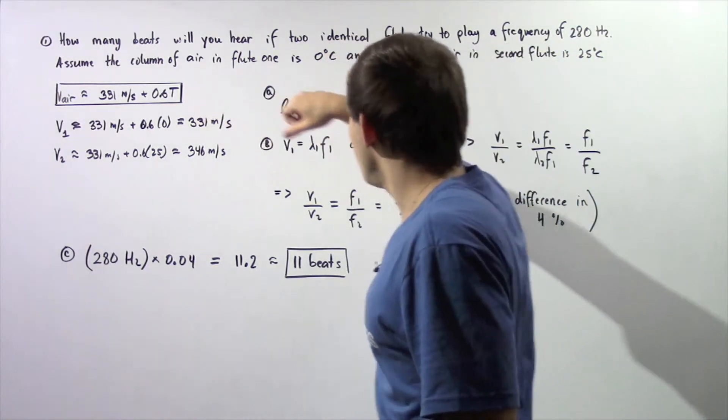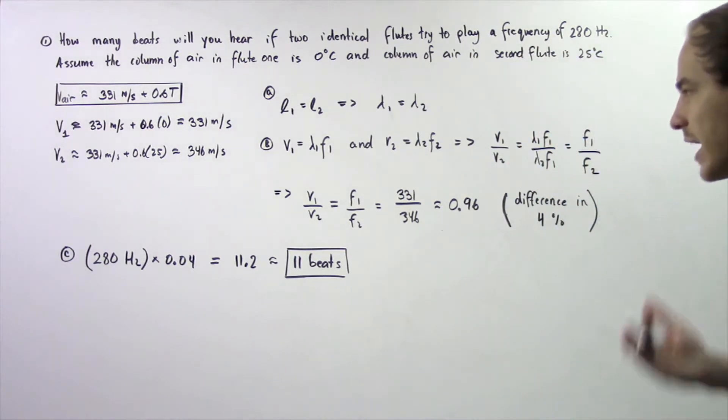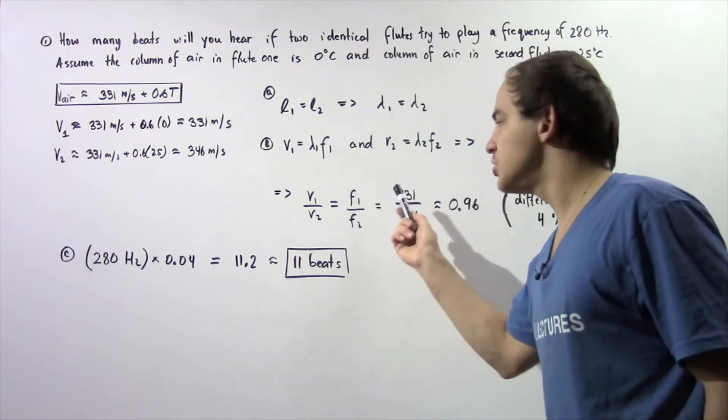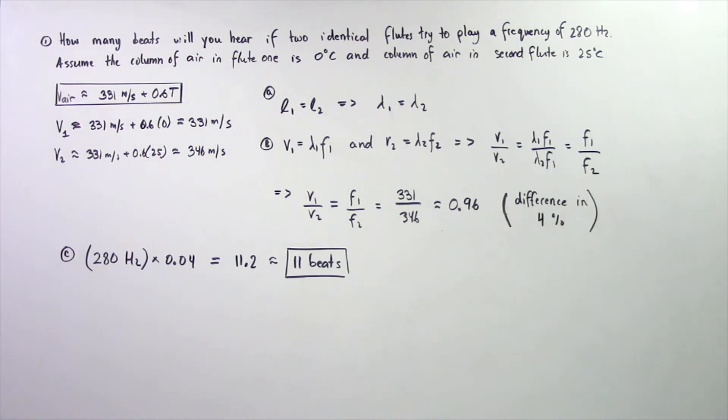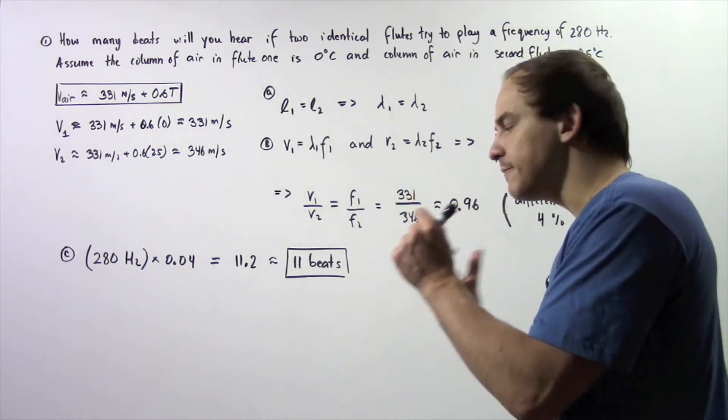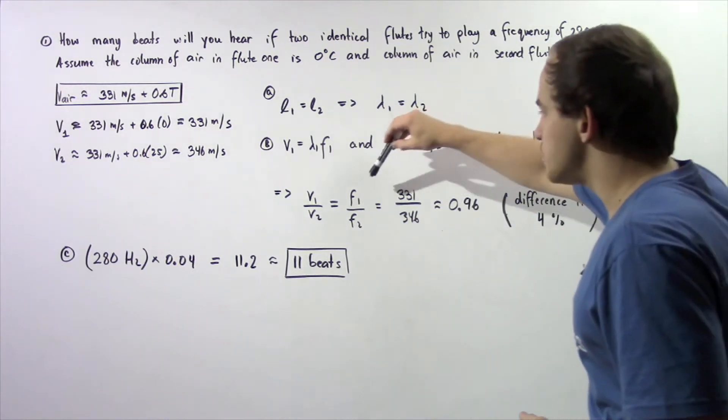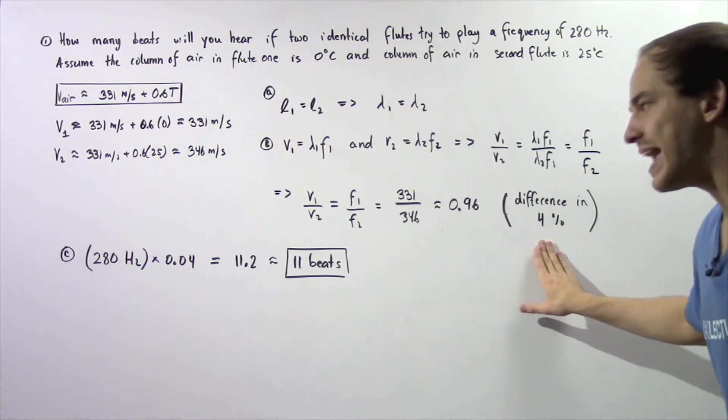Now, V1 is 331, V2 is 346. And we see that the ratio of F1 to F2, the frequency in flute one to the frequency in flute two, is approximately equal to 0.96. That basically means that the difference between frequency one and frequency two is about four percent.